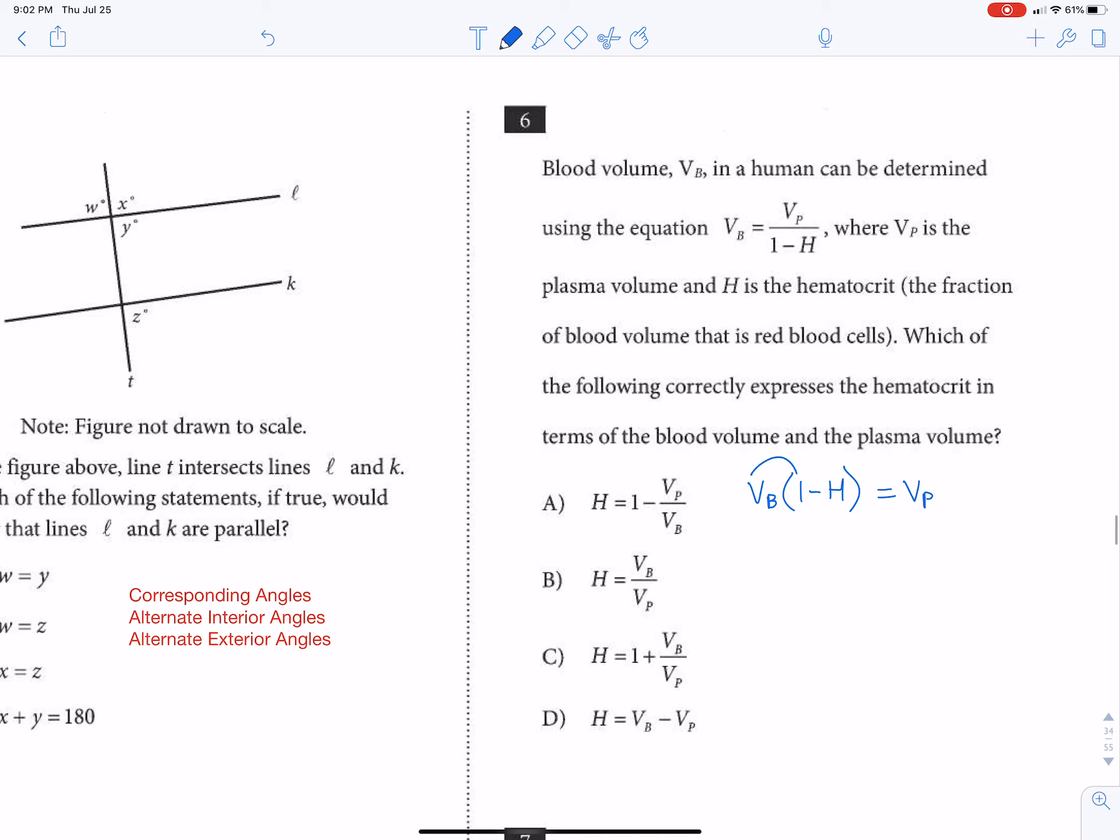But rather than distributing now, I'm just going to divide vb to both sides, which is going to give me vp over vb. I did that because we're trying to get h by itself. If I distribute it, it just kind of doesn't help further that cause whatsoever.